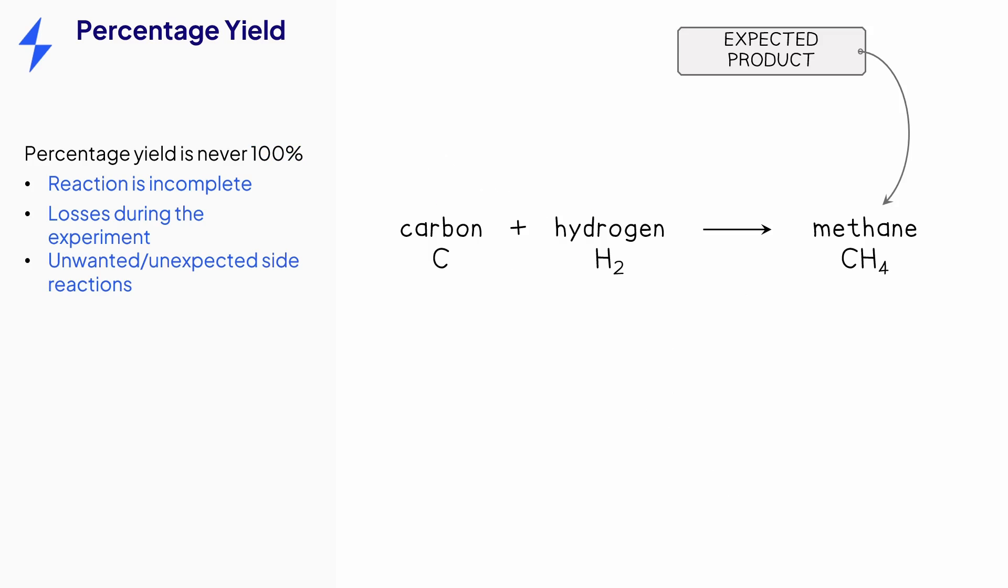Finally, different reactions may occur other than the expected reaction, which reduces the amount of reactant or product. For example, gases in the air, such as oxygen, may react with one of the reactants to form an unexpected product. Or the reactants may combine in different ways to form different products. In both of these cases, less of the expected product will be formed, reducing the percentage yield.